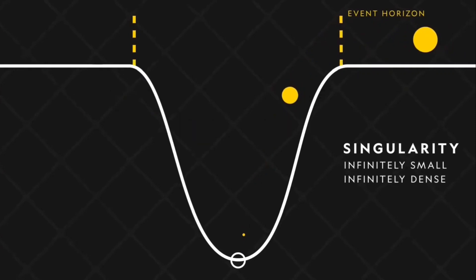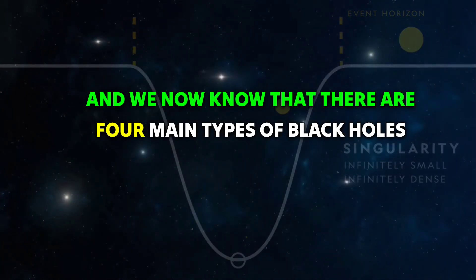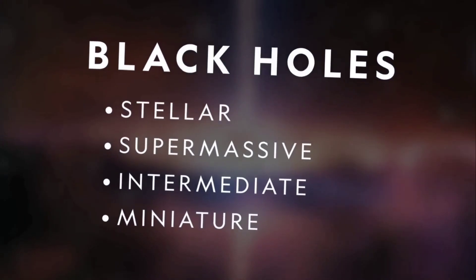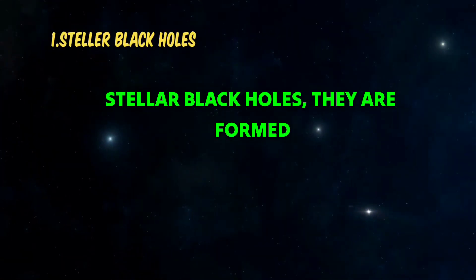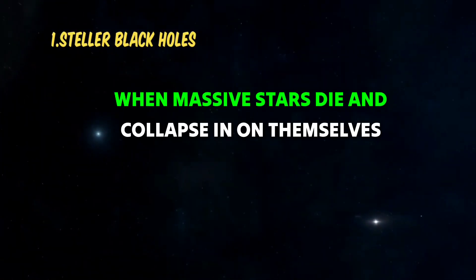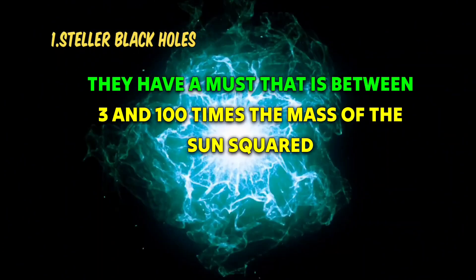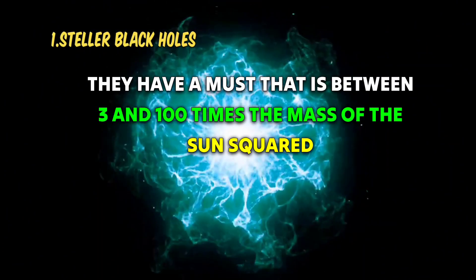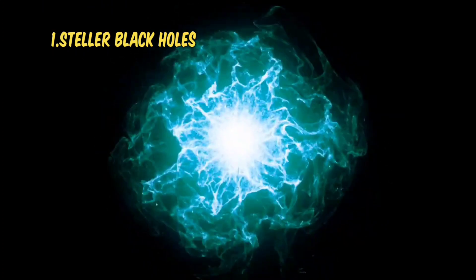We have also learned a great deal about black holes, and we now know that there are four main types. One: stellar black holes. They are formed when massive stars die and collapse in on themselves. They have a mass that is between three and 100 times the mass of the sun.